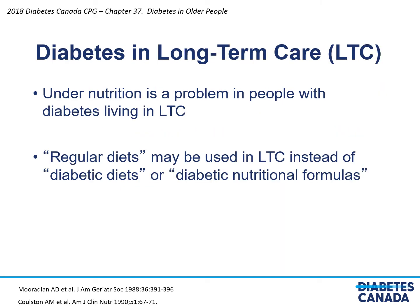Regarding diabetes and long-term care: undernutrition is a problem in people with diabetes living in long-term care. Regular diets may be used instead of diabetic diets or diabetic nutritional formulas, because the latter have not been shown to improve glycemic control.